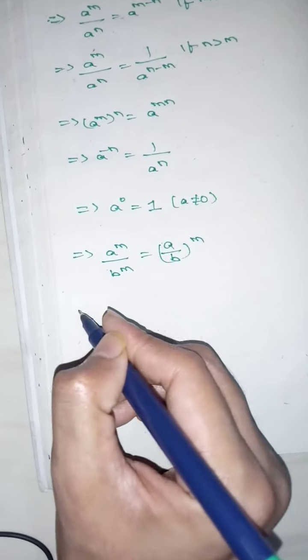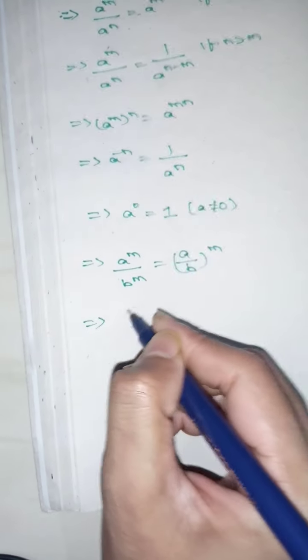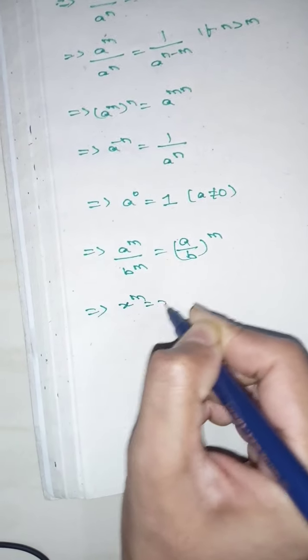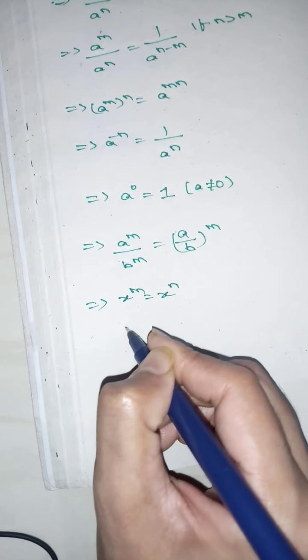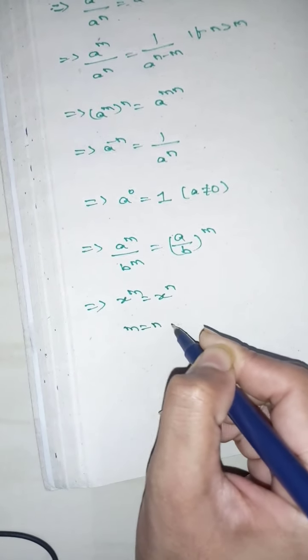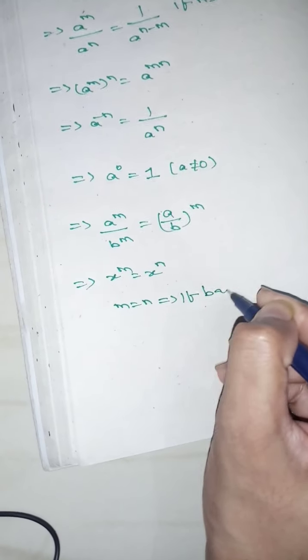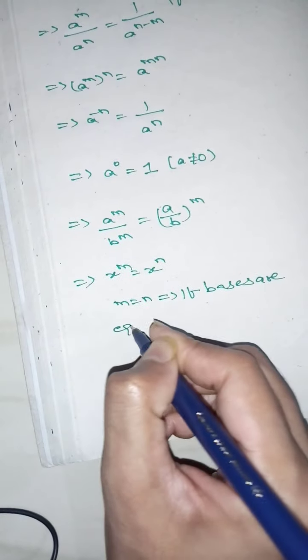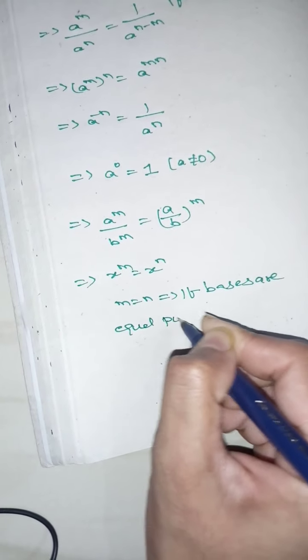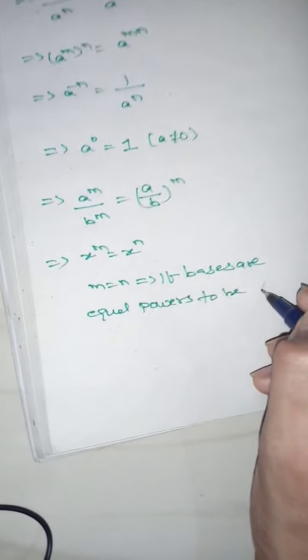The next principle is: if x power m is equals to x power n, and the bases are equal, then the powers must be equated, meaning m is equals to n.